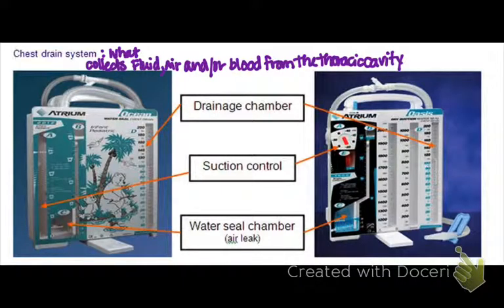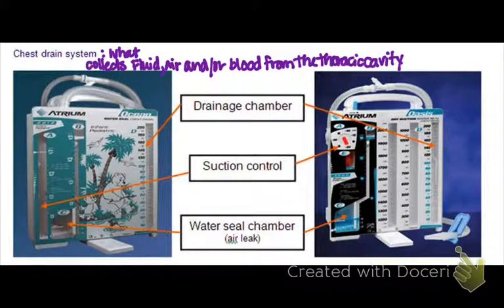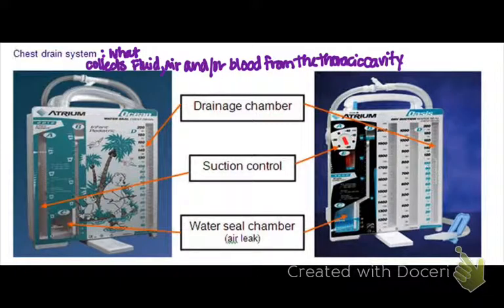You can have different types of trauma. You can have pneumothorax or hemothorax. Your pneumothorax can be open or closed. Open would be like a knife wound where air enters the pleural space through an opening. And closed would be like a broken rib that actually punctures the lung within the lung cavity.